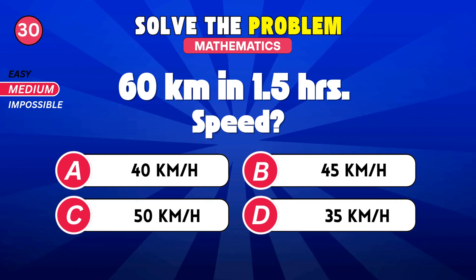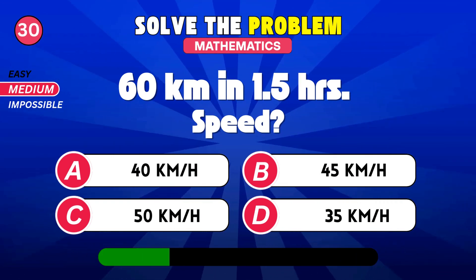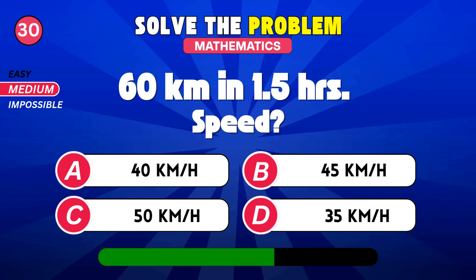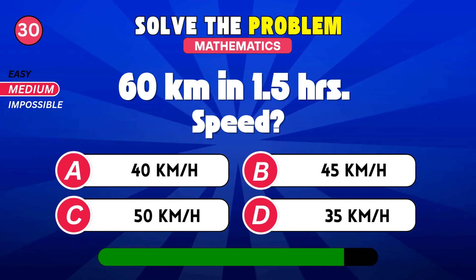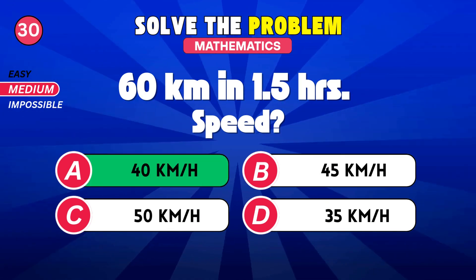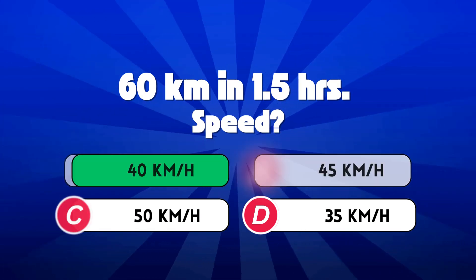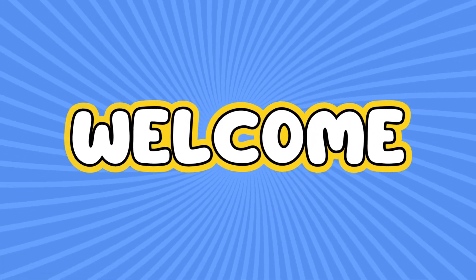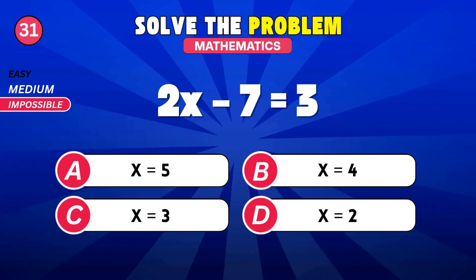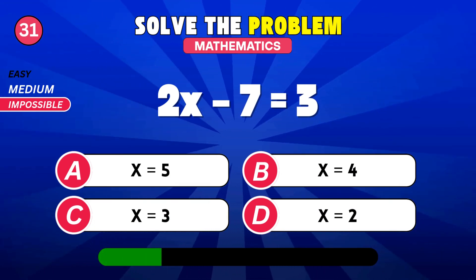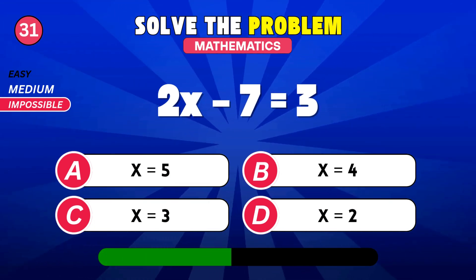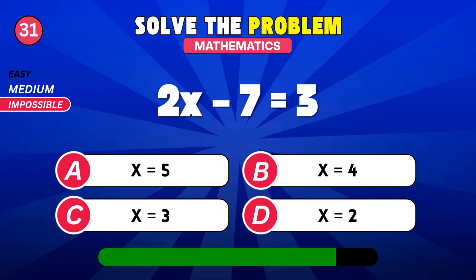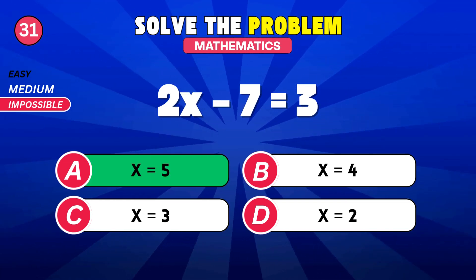60 kilometers in 1.5 hours. Find the speed. 40 kilometers per hour. Find X. 5.